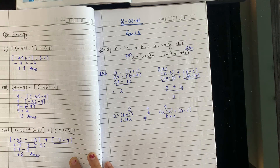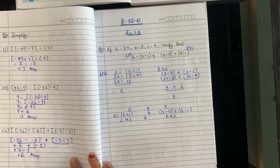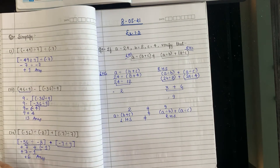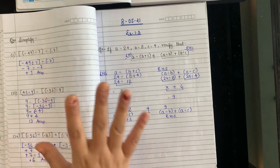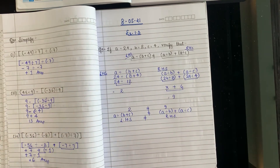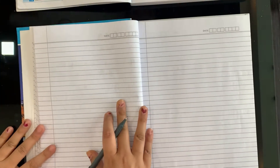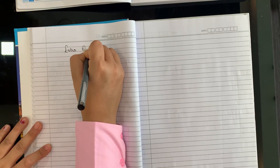Very good, children! We are done with Exercise 1.3. We will do till here only. Your formative syllabus covers up to here — so you have to prepare very, very well: Exercise 1.1, Exercise 1.2, and Exercise 1.3. All three exercises are coming in your formative. Now we will do some extra questions. Write down the heading: Extra Questions.